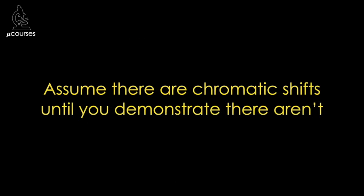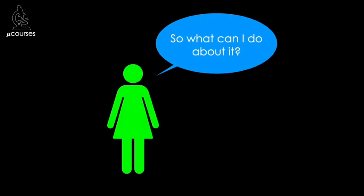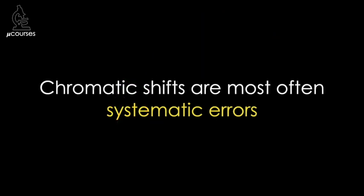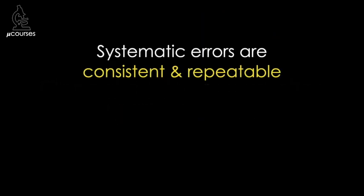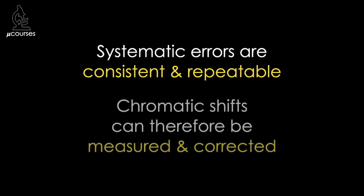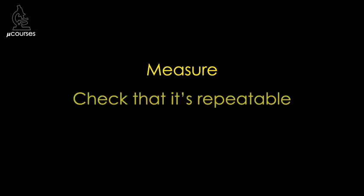With all of these potential sources, it's best practice to assume that your imaging system introduces chromatic shifts into your images until you demonstrate it doesn't. Chromatic shifts are most often systematic errors — errors that are consistent and repeatable — which means they can be carefully measured and corrected in your images. So you're going to need to measure the shift, make sure that the shift is the same each time, and then correct for it.